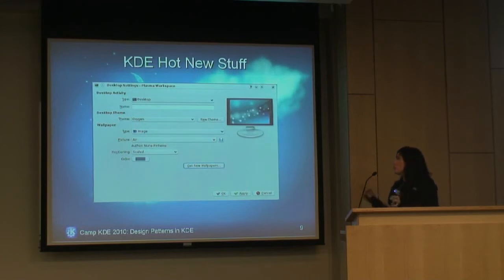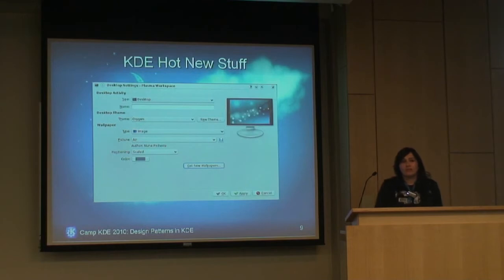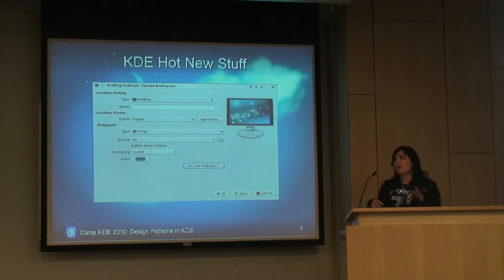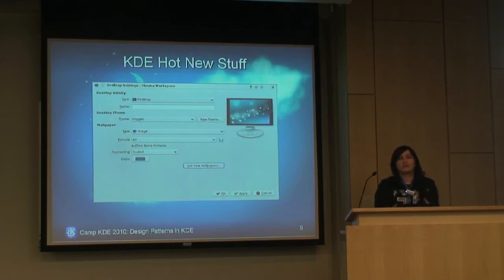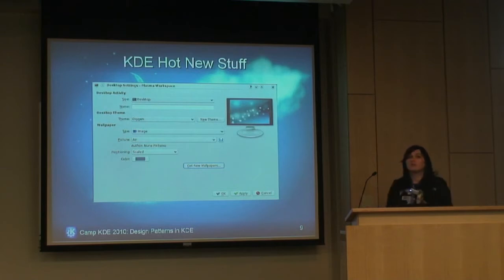However, the way to actually use this functionality in the environment is extremely inconsistent. Internally there's a KNS class that plugs into the framework and pulls whatever content you want. But the actual front end isn't controlled by anything — developers have to put the button, the label, and whatever icon they want. As a result, the same functionality is displayed many different ways in KDE.